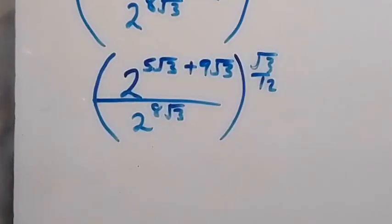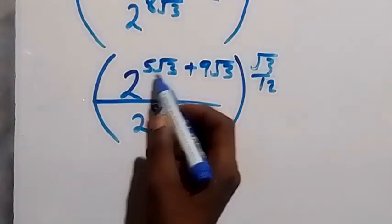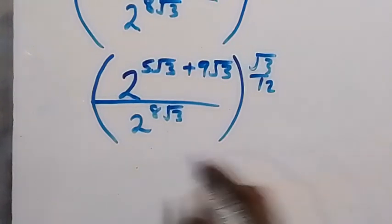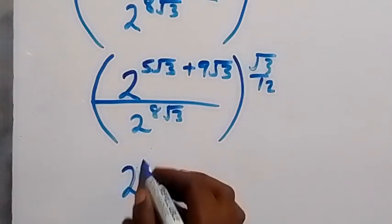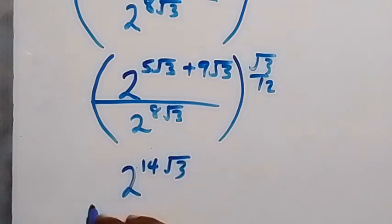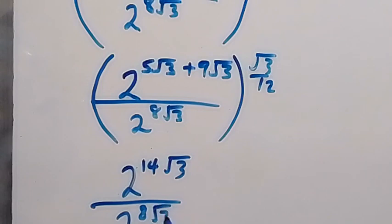When we add 5 root 3 plus 9 root 3, that gives us 14 root 3. So we have 2 raised to power 14 root 3, divided by 2 raised to power 8 root 3, all raised to power root 3 over 12.